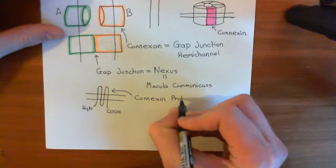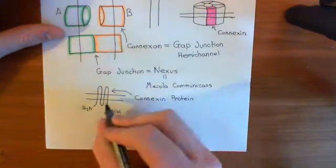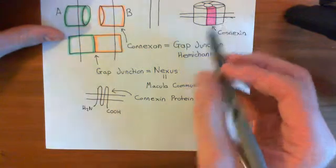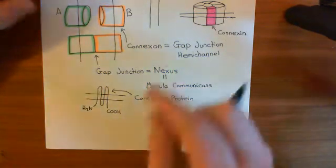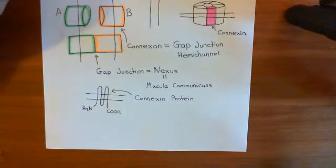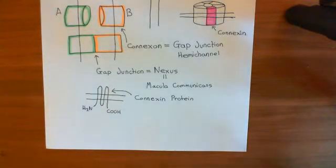What you can do is connect six of these connexin proteins together to make a connexon. You can make these homo- or heterohexamers, and then join the connexons together to make a gap junction. So that's all the detail I've got to say on the actual structure of gap junctions.